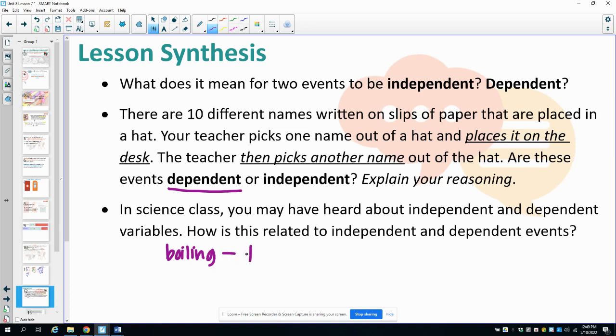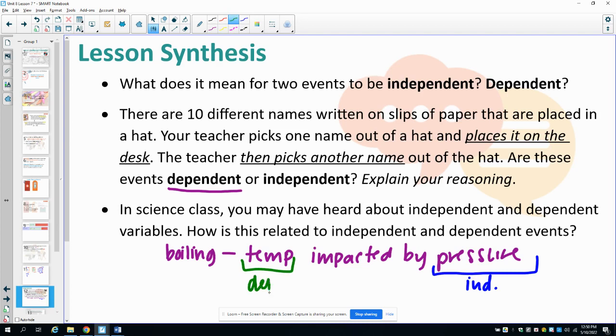the temperature that water boils at is impacted by the pressure. So the amount of pressure is independent. So this could change based on wherever your atmosphere is at. So this is the independent variable and that directly impacts the temperature at which the water boils. So this is the dependent variable. Pressure can change based on environment and then that tells you the temperature that the water would boil at.